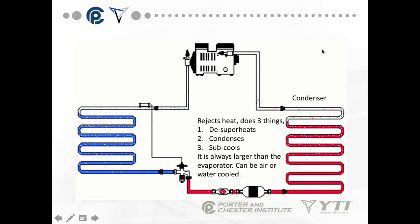De-superheating is taking the heat coming out of the inside of the building, plus the heat generated by the compressor, and lowering it to the temperature where the refrigerant can condense — a change of state from vapor to liquid. Once condensation occurs, the refrigerant further drops in temperature, which is called sub-cooling. The condenser in an air conditioning system is always larger than the evaporator. It can be air or water-cooled, but most you'll see are air-cooled.